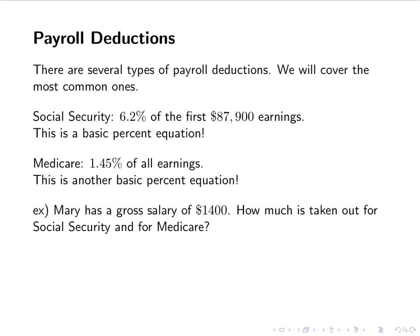Let's do an example. Mary has a gross salary of $1,400. How much is taken out for Social Security and for Medicare? For Social Security, the question is: what is 6.2% of $1,400? The basic percent equation tells us we're looking for .062 times $1,400. 6.2% divided by 100 is .062, and "of" means multiplication. So .062 times $1,400 gives us $96.80.